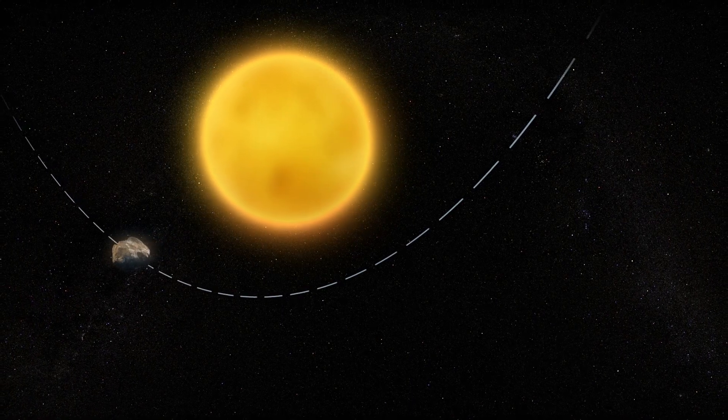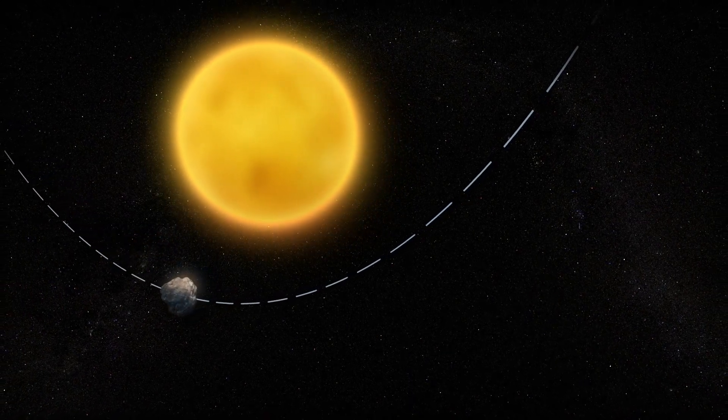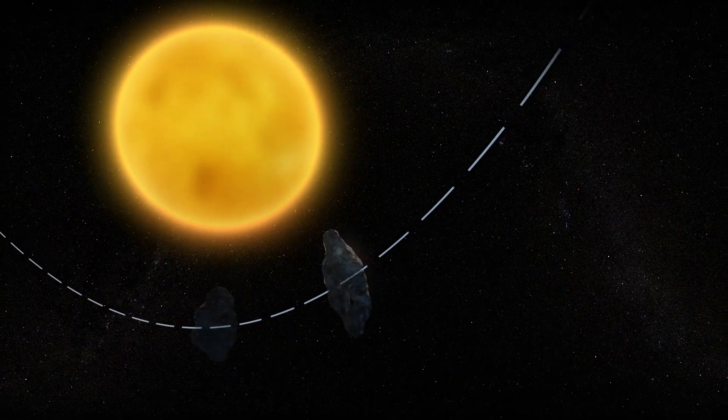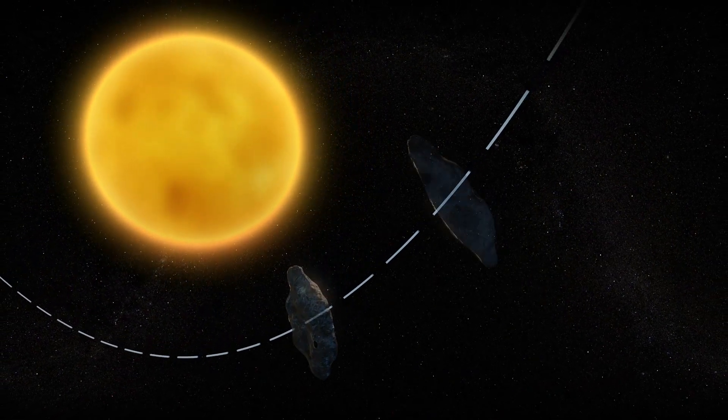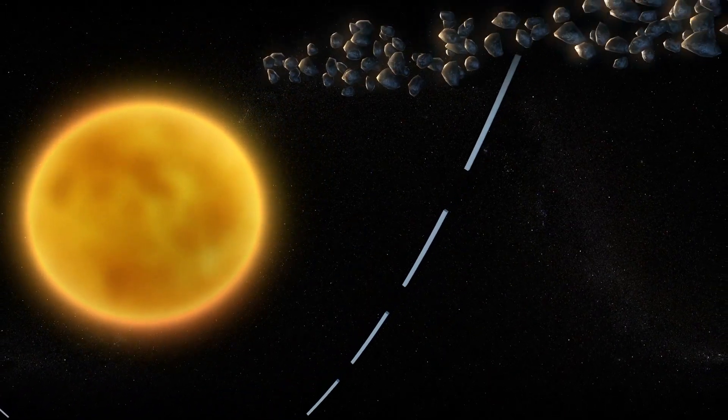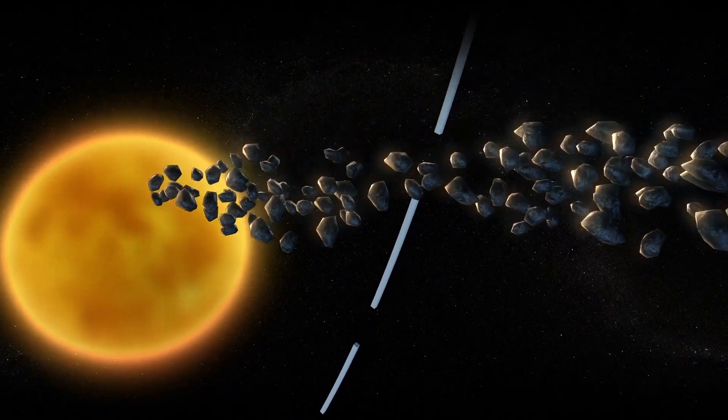Writing in a news release, researchers say that Oumuamua's parent body or bodies may have had a close encounter with a host star. They say computer models show the tidal forces from the stars could rip the parent body apart and turn the original object into an elongated field of debris.